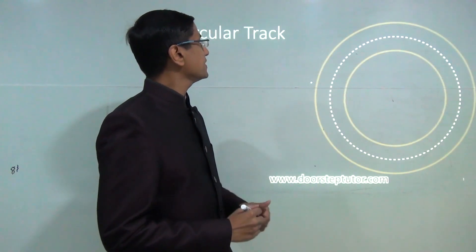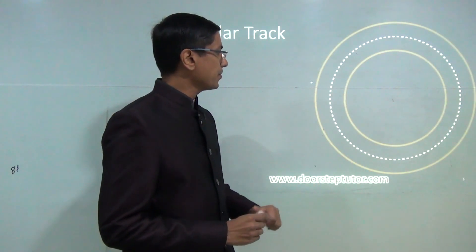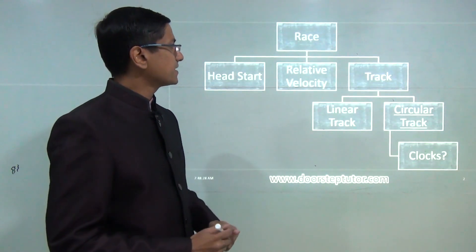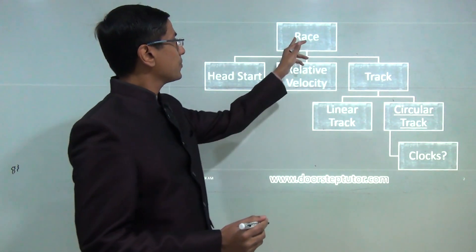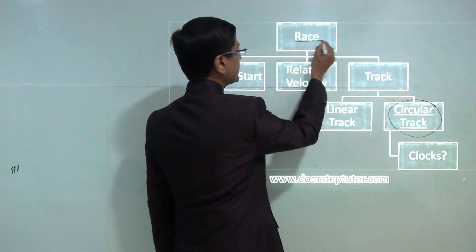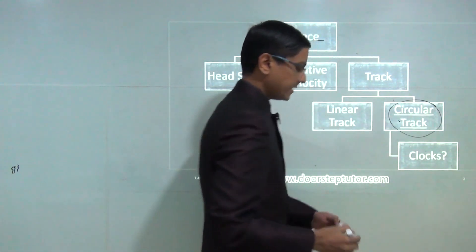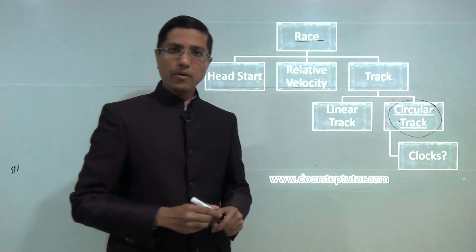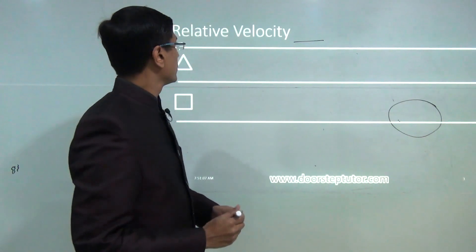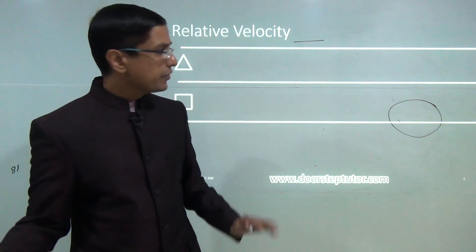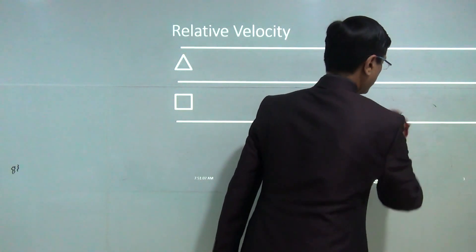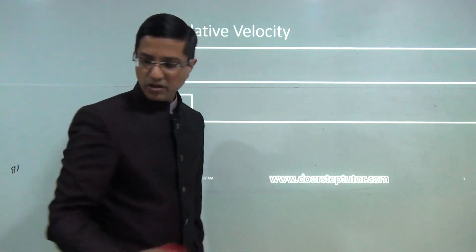Welcome. Today we would be discussing some problems on circular tracks. This is how this particular class fits into our scheme — we have been discussing races, and today we would discuss some problems involving circular tracks. Before we start, let us review an important concept: the concept of relative velocity.